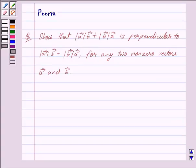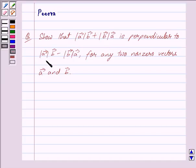Hi friends, I am Poorva and today we will discuss the following question. Show that |A × B| + |B × A| is perpendicular to |A × B| − |B × A| for any two non-zero vectors A and B.